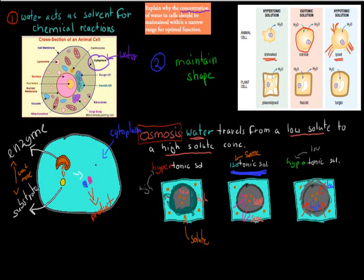So explain why the concentration of water in cells should be maintained within a narrow range for optimal function. Because we need water at a good level for chemical reactions to occur at a good rate and to maintain the shape of the cell. Obviously if the cell bursts then optimal function is not achieved.